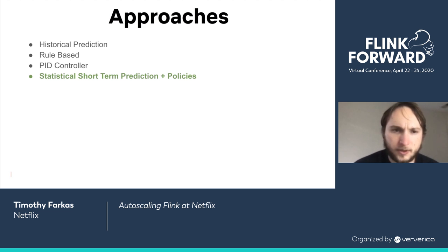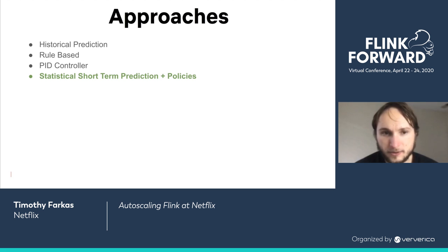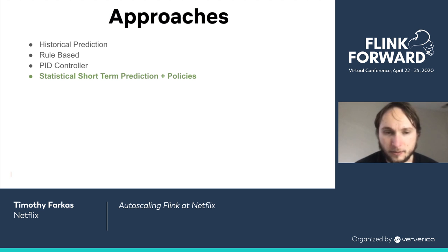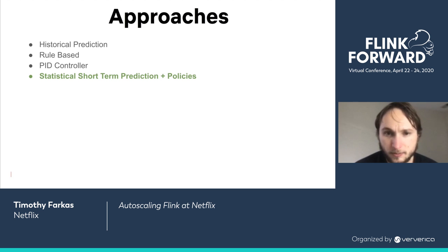There are a few approaches available. One widely used at Netflix for API services is the historical prediction approach, which requires collecting data over past days and weeks to predict the next day's traffic. Another is the rule-based approach. Another is a PID controller, used by the Mantis Netflix stream processing engine, but it requires low-latency metrics and is difficult when there's high metric latency — which is our case. The approach I opted for was statistical short-term prediction with policies.